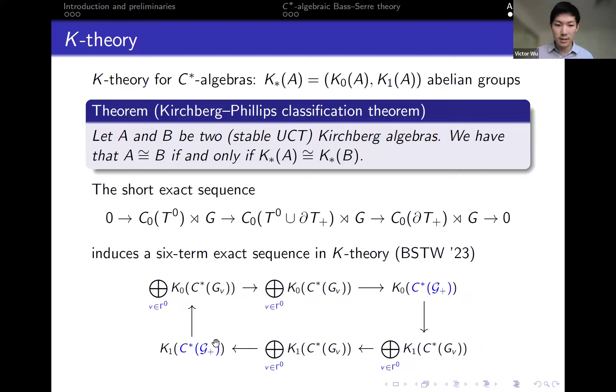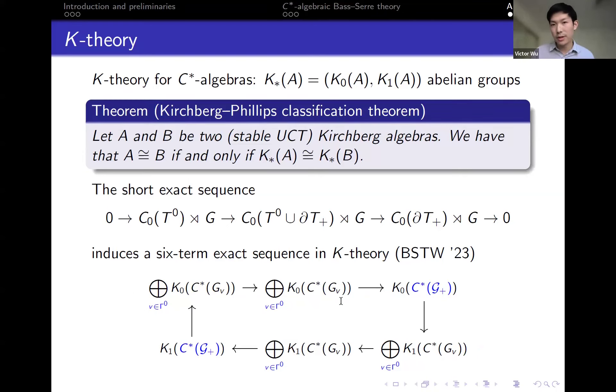Because K-theory is invariant under Morita equivalence, the result I showed earlier means we can get a six-term exact sequence for the C*-algebras of directed graphs of groups as well. Here is the C*-algebra of the directed graph of groups, and now in the direct sums, instead of looking at vertex stabilizer groups, we're just looking at the vertex groups in the graph of groups.